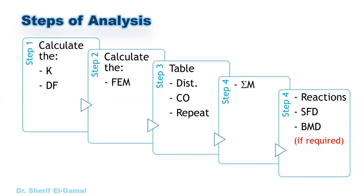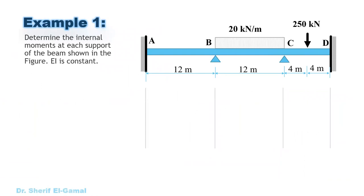To demonstrate, we will go through two examples. The first example is a three-span beam A, B, C, and D. The first span is 12 meters, then 12 meters, then 8 meters. Span AB is not loaded. Span BC is loaded by a uniform distributed load of 20 kN/m. Span CD has a concentrated load of 250 kN at the midpoint. We are required to determine the internal moments at each support.